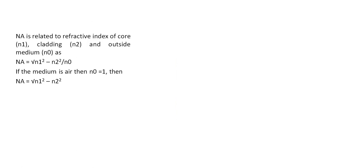Numerical Aperture is related to the refractive index of core, cladding, and the outside medium. The formula is: NA equals the square root of (N1 squared minus N2 squared) divided by N0. Here, N1 is the refractive index of the core, N2 is the refractive index of the cladding, and N0 is the refractive index of the outside medium.